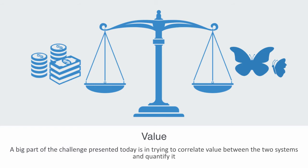This in many ways defines a big part of the challenge presented today — trying to correlate value between the two systems and quantify it. We understand to some extent what economic value is, but defining exactly the value of ecosystem services would appear to be much more complex. What we're trying to do by valuing ecosystem services is to manage them through economic feedback loops — incorporating the value of these things into economic accounting to make people financially accountable for their effects on the natural environment.